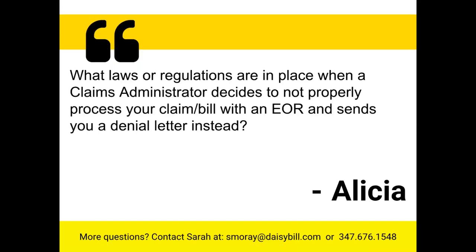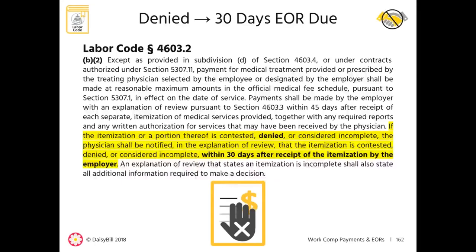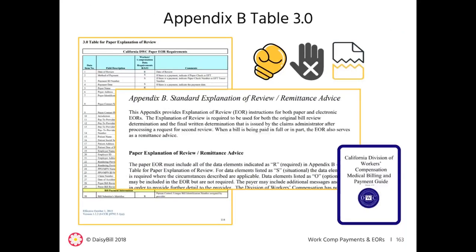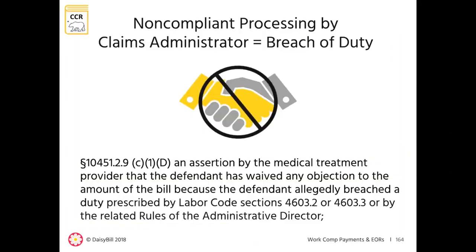Alicia asks: what laws or regulations are in place when a claims administrator decides to not properly process your claim or bill with an EOR and sends a denial letter instead? If the claims administrator denies your bill, they must notify you with an EOR within 30 days. A denial letter is compliant if it contains all the required EOR information and is sent within the required time frame. Otherwise, the claims administrator is in breach and you can file a lien.